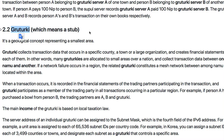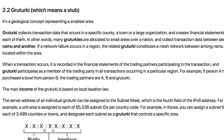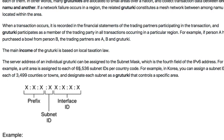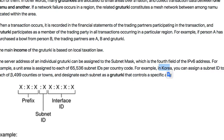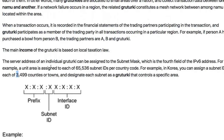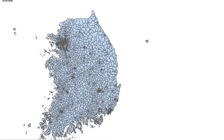Grootgi means 'a spot.' It is also a geographical concept, representing the smallest administrative area — a county or town. It also manages Grootgi servers with IPv6 addresses. In Korea, there are about 3,500 counties, so there are as many Grootgi servers in Korea. Here, here, and here are all Grootgi — all geographical concepts.